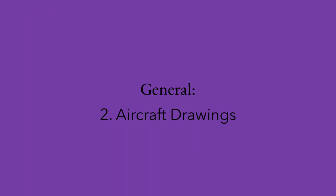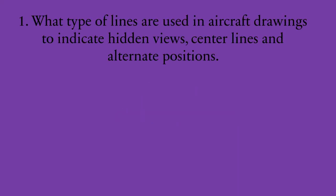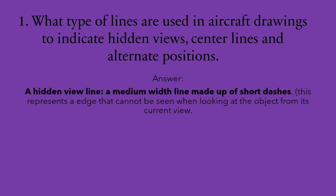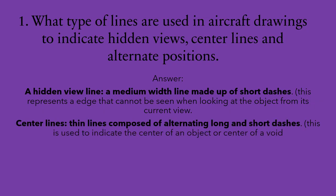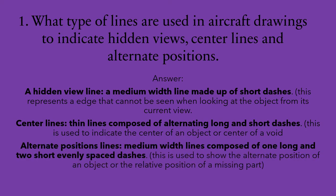Section two: aircraft drawings. Question number one: what type of lines are used in aircraft drawings to indicate hidden views, center lines, and alternate positions? Hidden view lines are medium-width lines made up of short dashes. Center lines are thin lines composed of alternating long and short dashes. And alternate position lines are medium-width lines composed of one long and two short evenly spaced dashes.